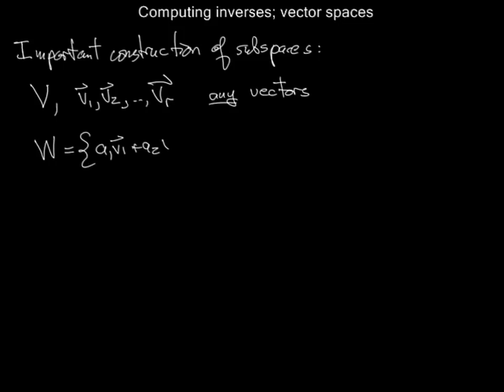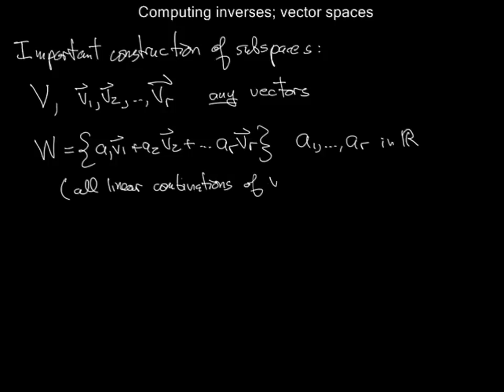And let W be the following set: A1V1 plus A2V2 plus ... plus ArVr, where A1 through Ar are any scalars. In other words, this is all of the linear combinations of the vectors V1 through Vr.